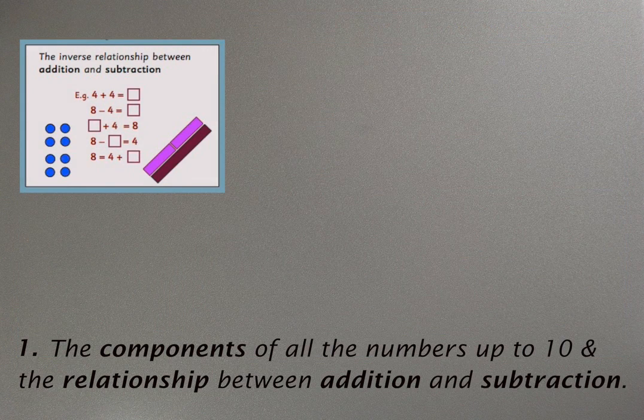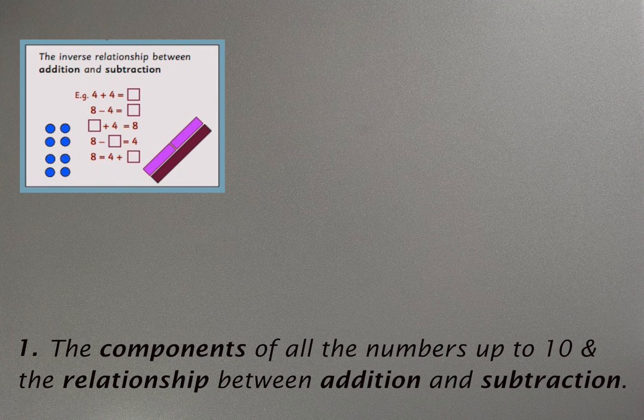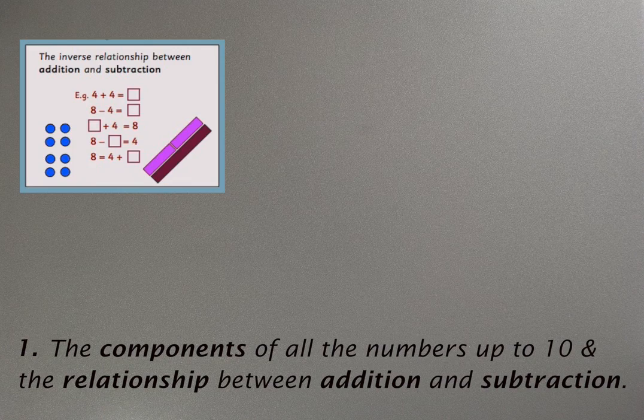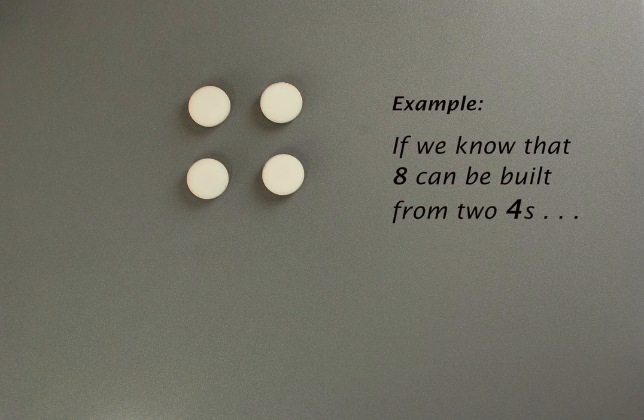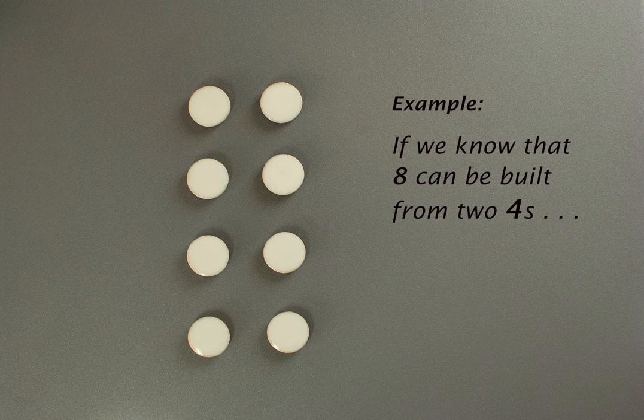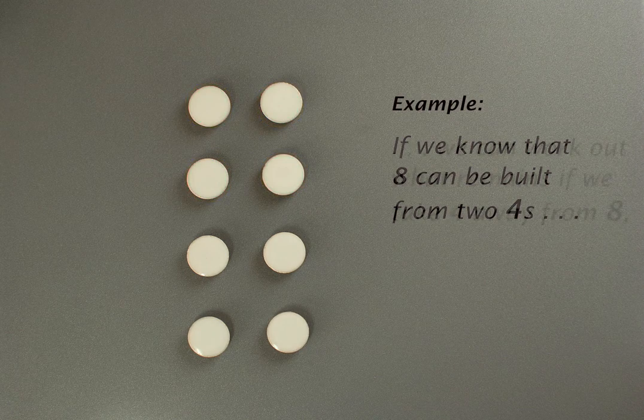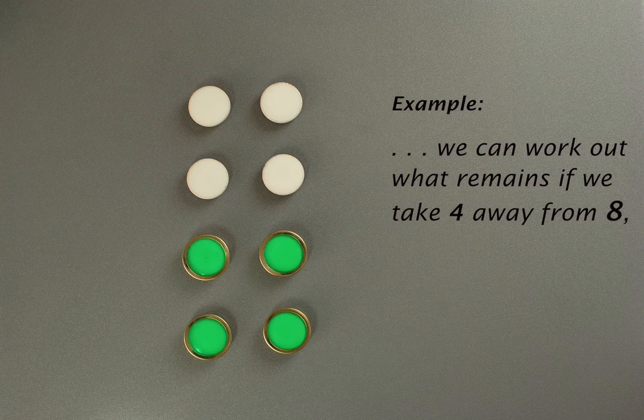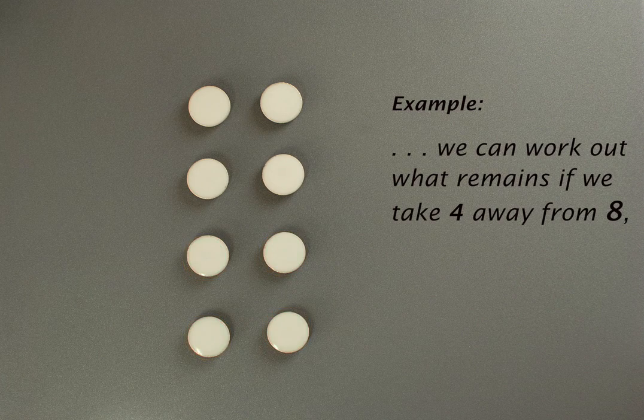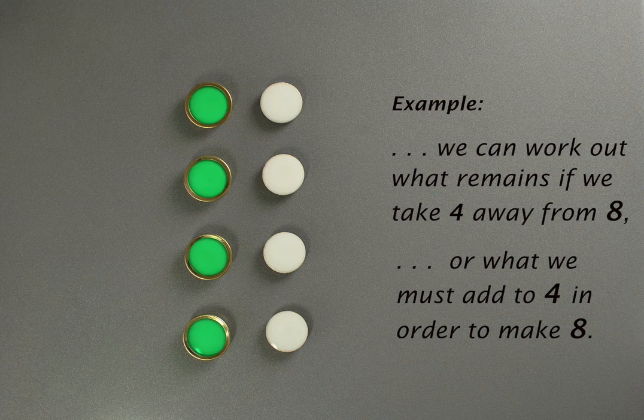The first pre-skill is to know the components of all the numbers up to ten and to understand the inverse relationship between addition and subtraction. In my example you can see that if we know that eight can be built out of four and four, we can work out what remains if we take four away from eight or what we must add to four in order to make eight.